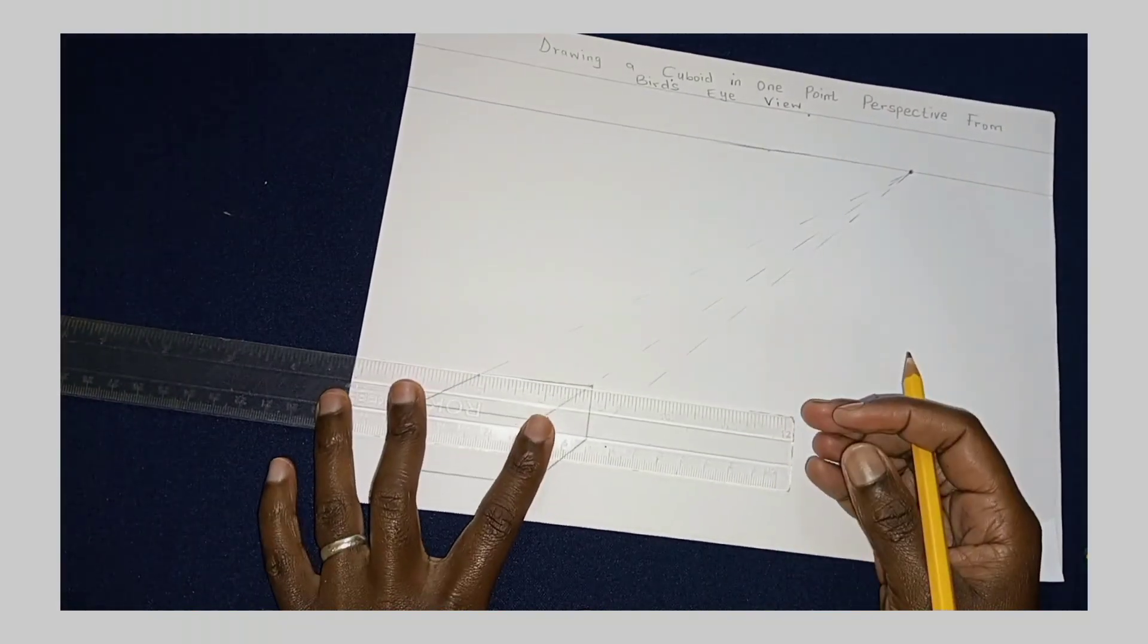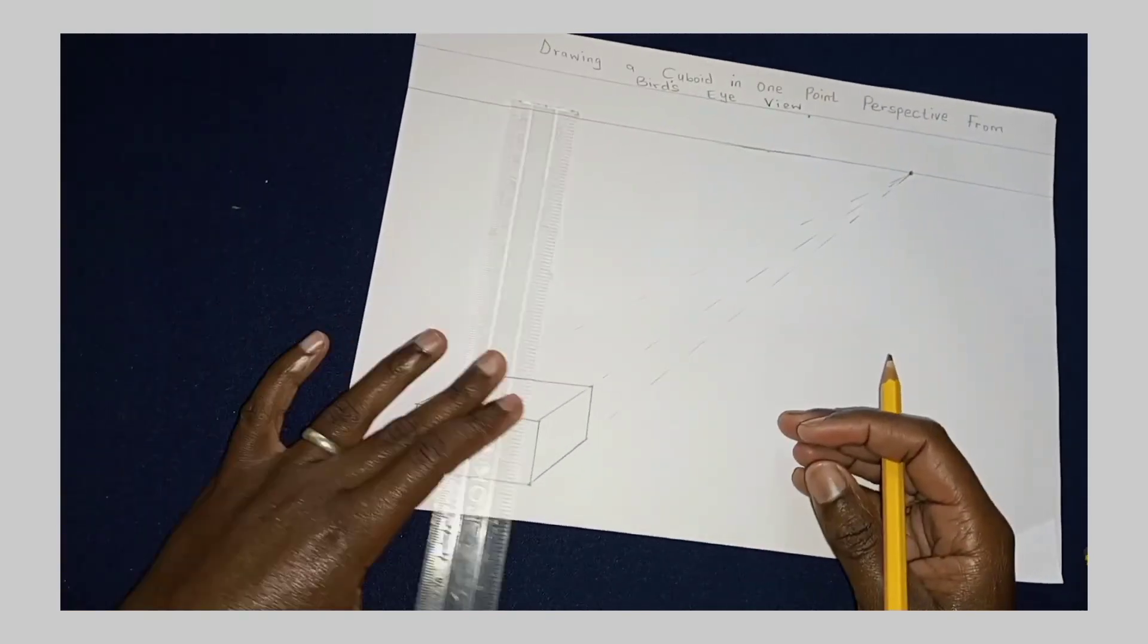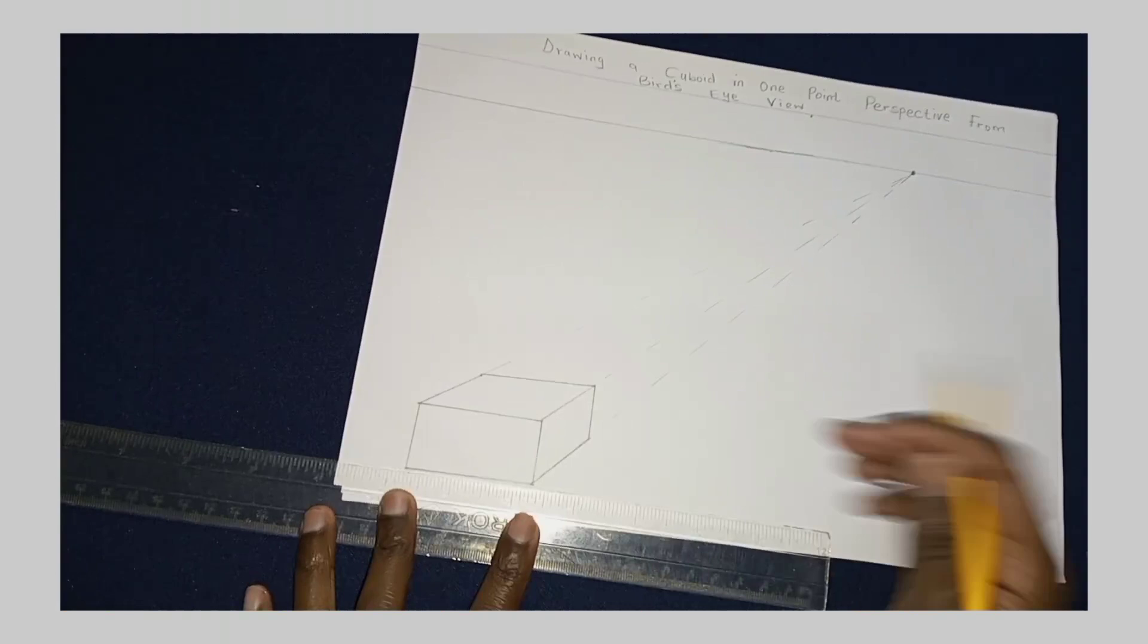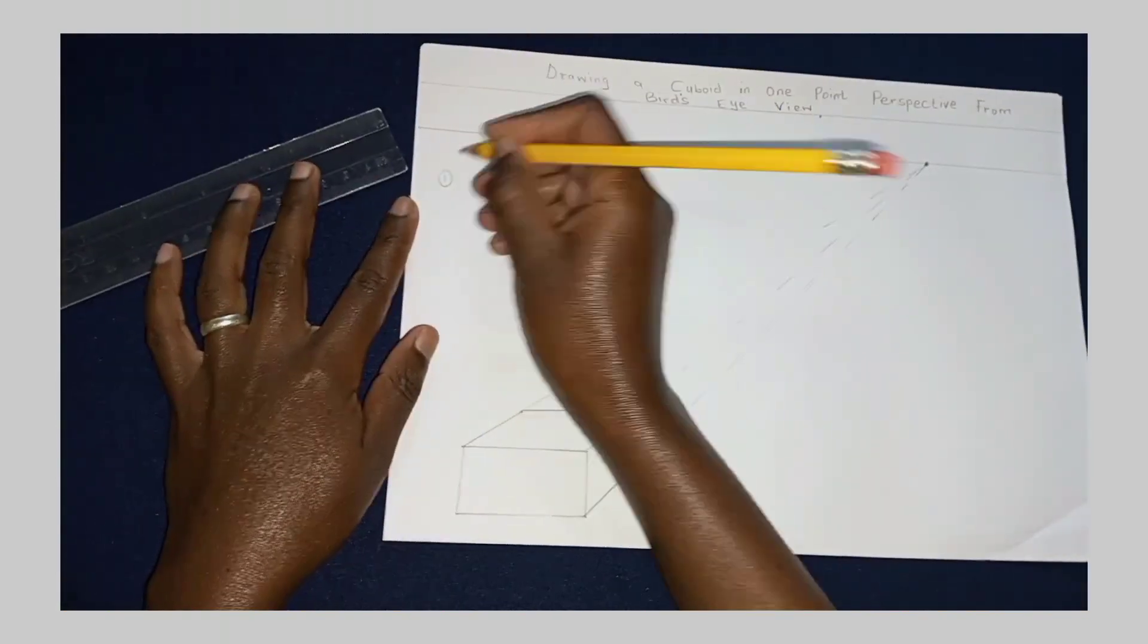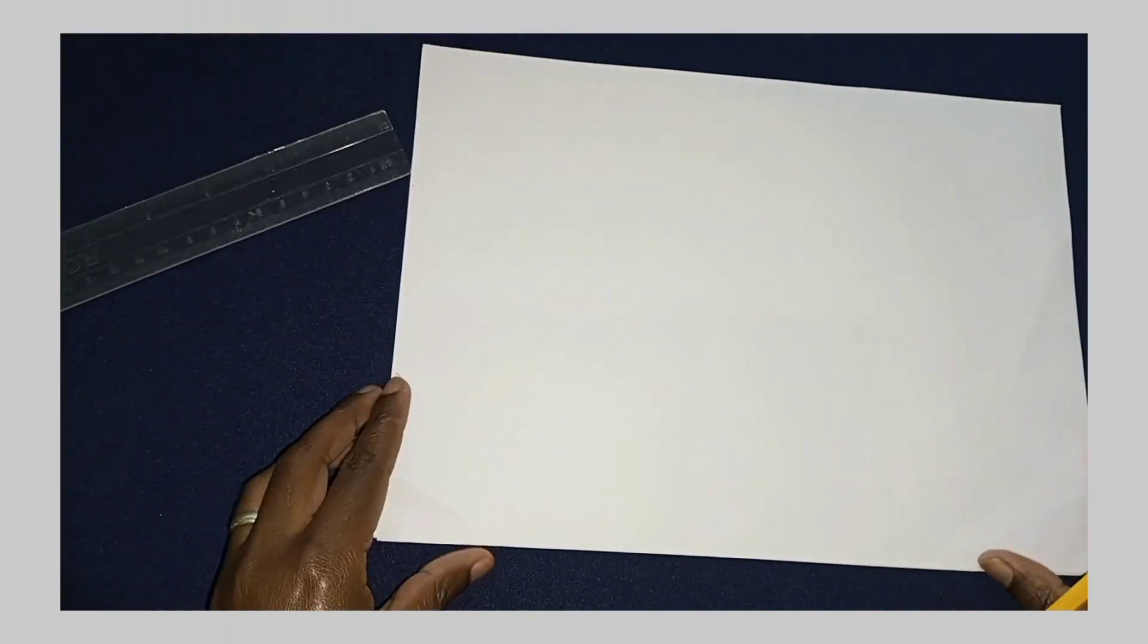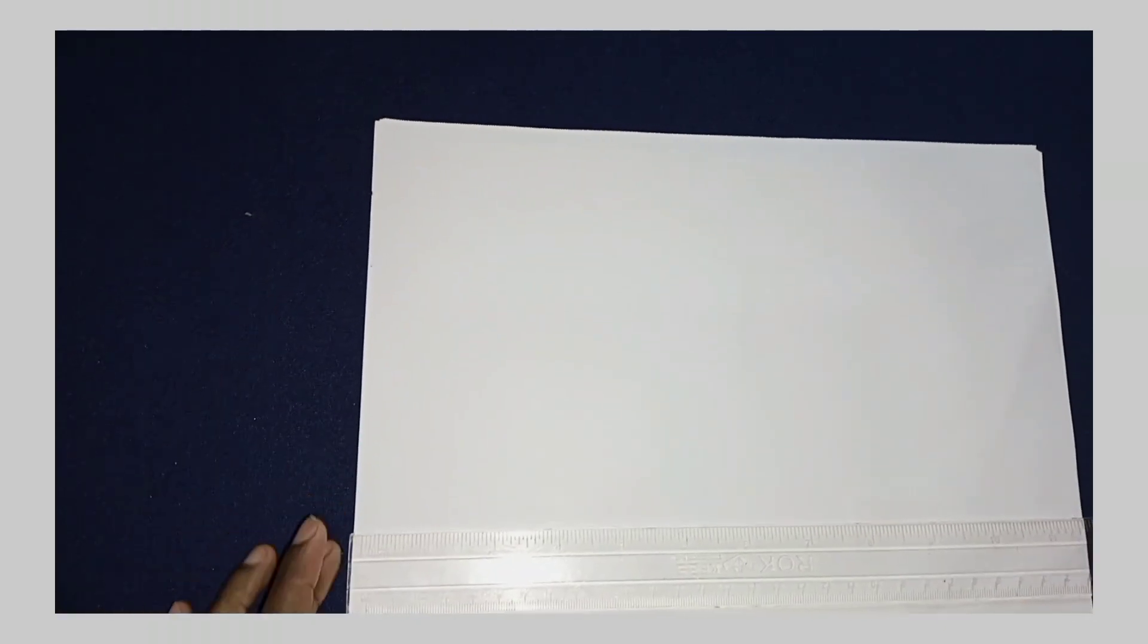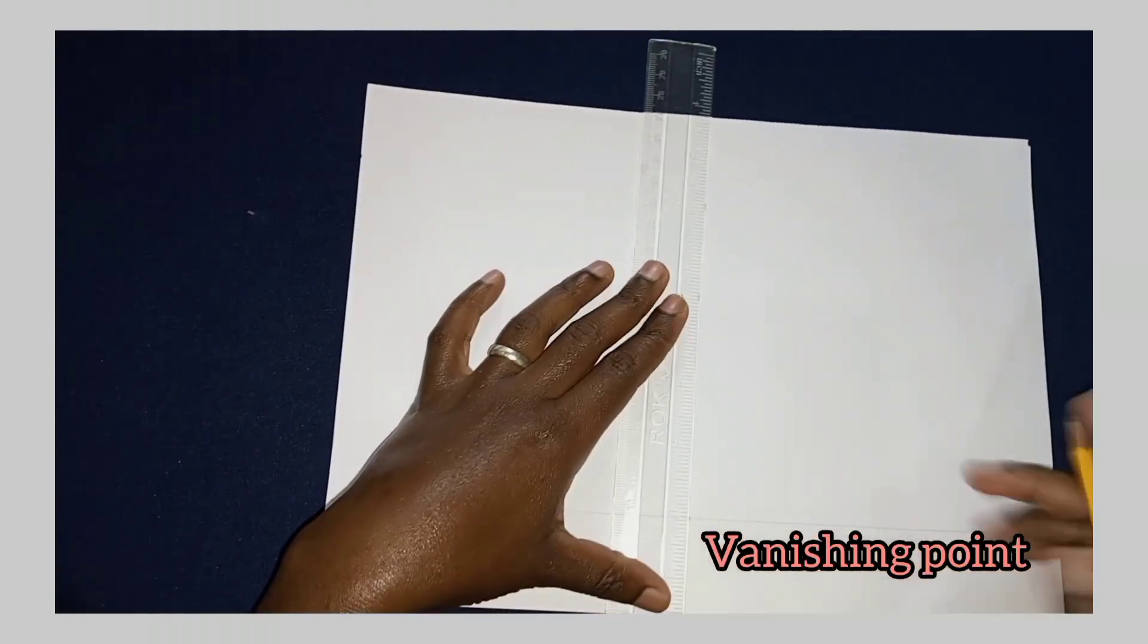Having completed the cuboid you can now erase all the projection lines and also the horizon line. In the second cuboid, the horizon line and the vanishing point are normally below the cuboid, so you begin by drawing the horizon line.